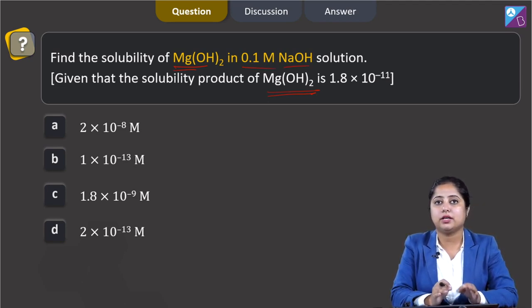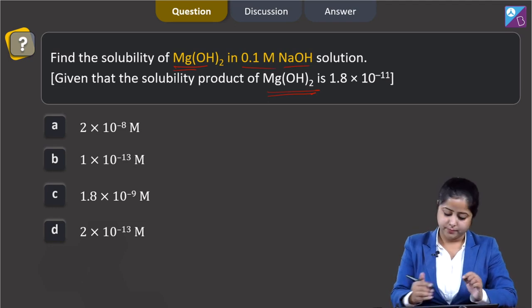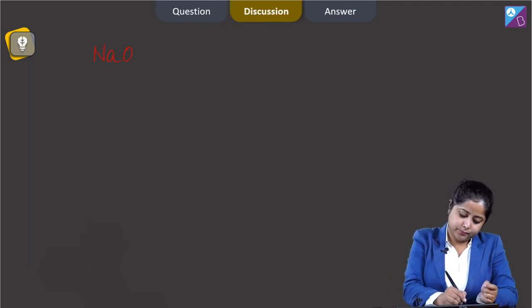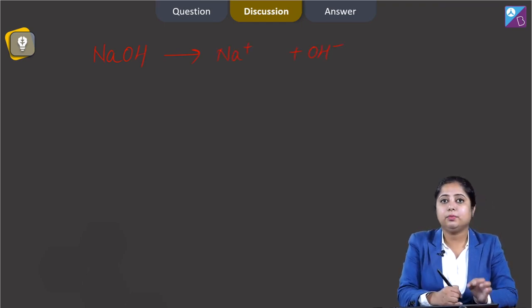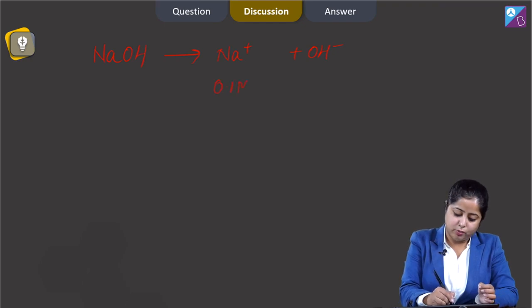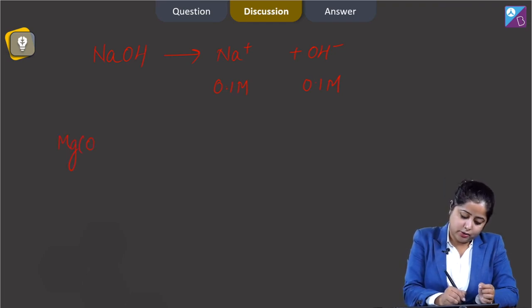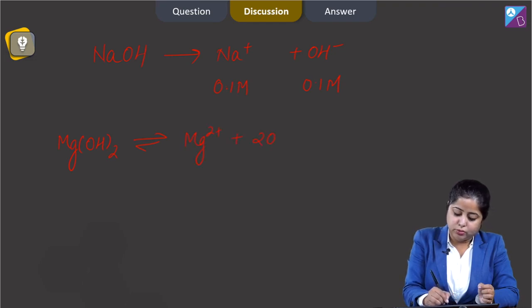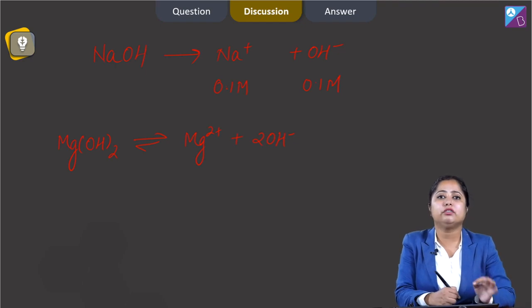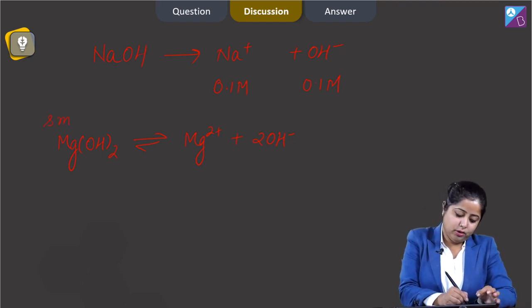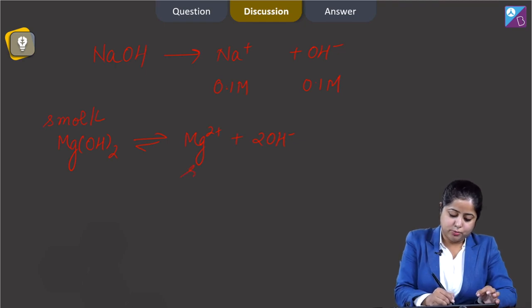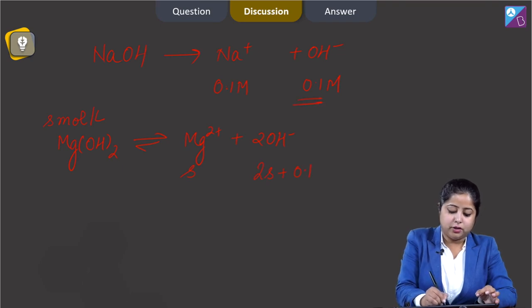The hydroxide ion is common in the solution. Since NaOH dissociates completely into Na⁺ and OH⁻, 0.1 molar NaOH gives 0.1 molar OH⁻. Magnesium hydroxide dissociates to give Mg²⁺ + 2OH⁻. Taking the solubility of Mg(OH)₂ as S mol/L, the Mg²⁺ concentration is S and the OH⁻ concentration is 2S + 0.1 (from NaOH).